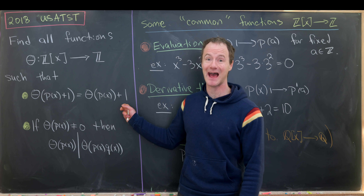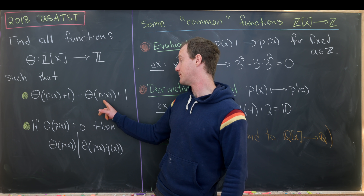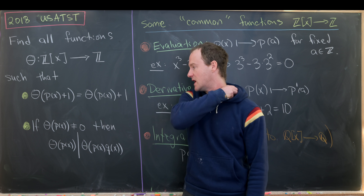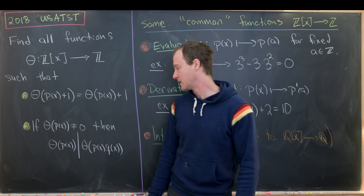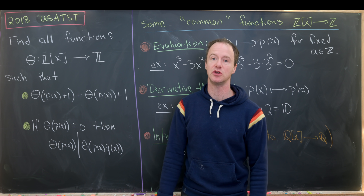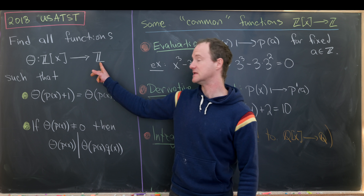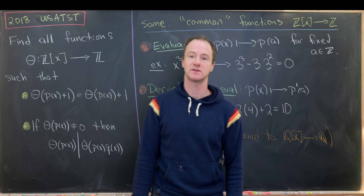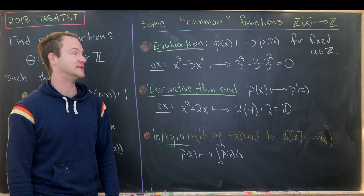The first is an additivity condition: θ(p(x) + 1) = θ(p(x)) + 1, so we can take this plus one out. The second condition says that if θ(p(x)) is not zero, then θ(p(x)) divides θ(p(x)·q(x)). Since θ maps to integers, these are just numbers, so this is a divisibility condition occurring in the integers.